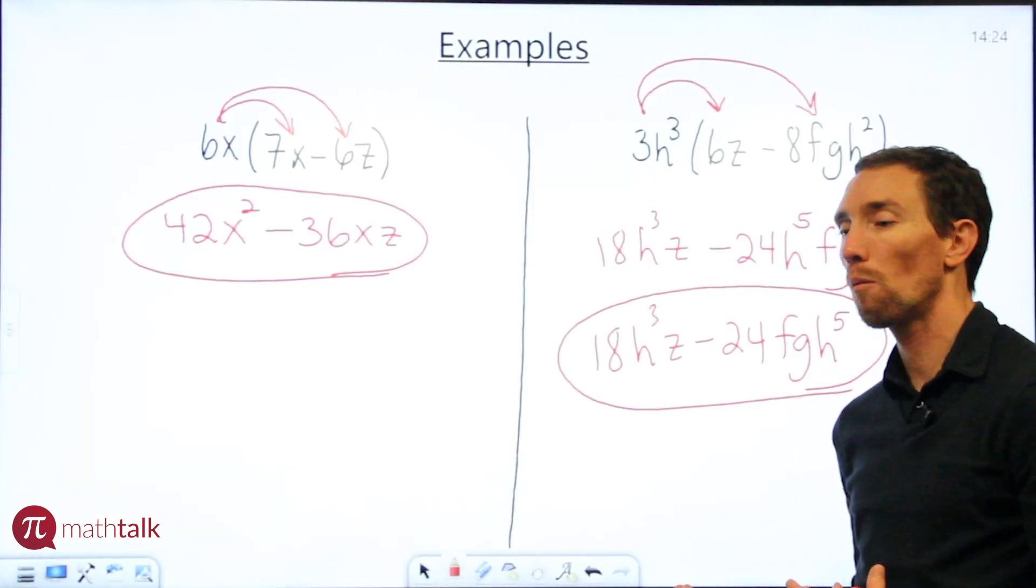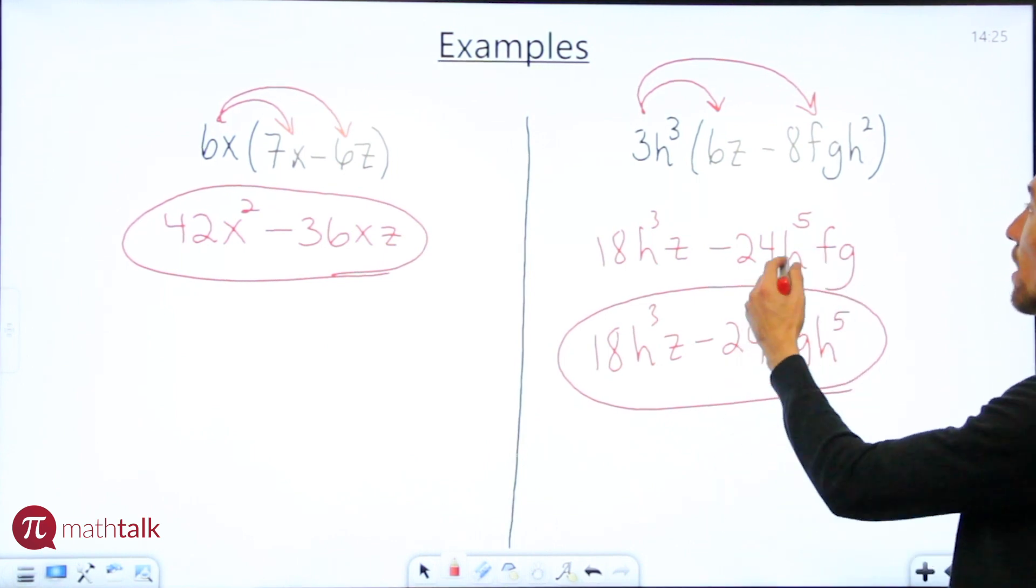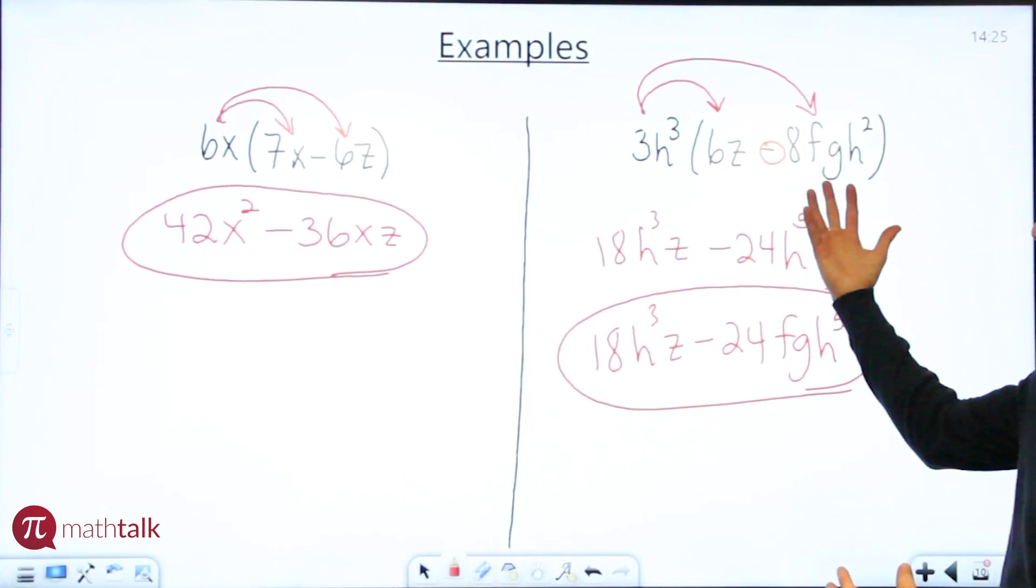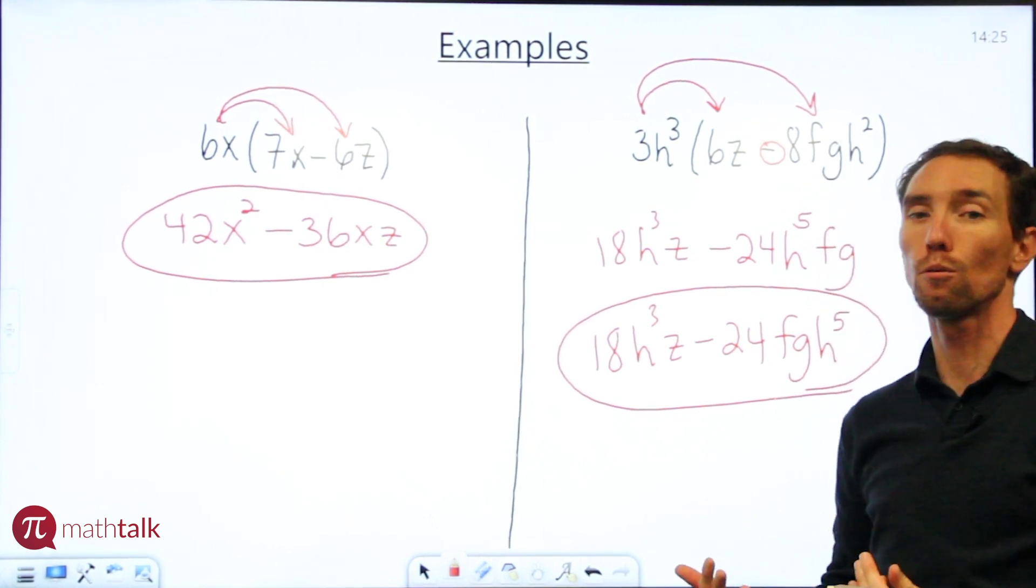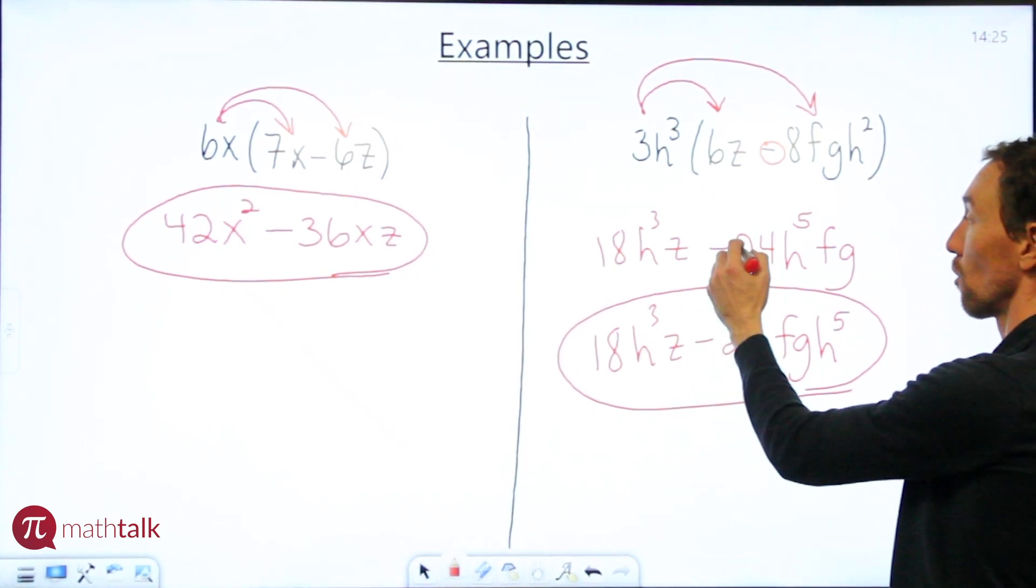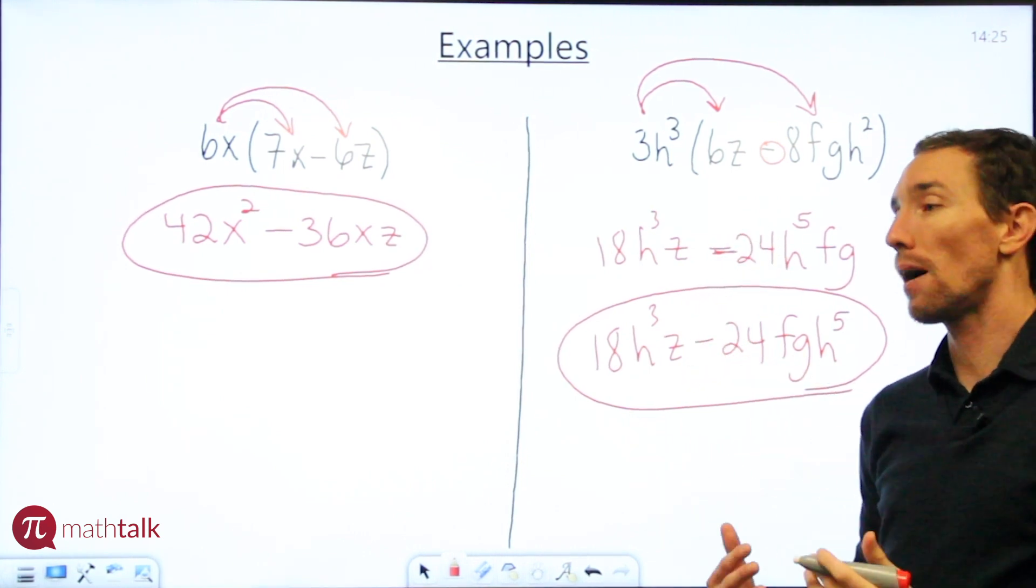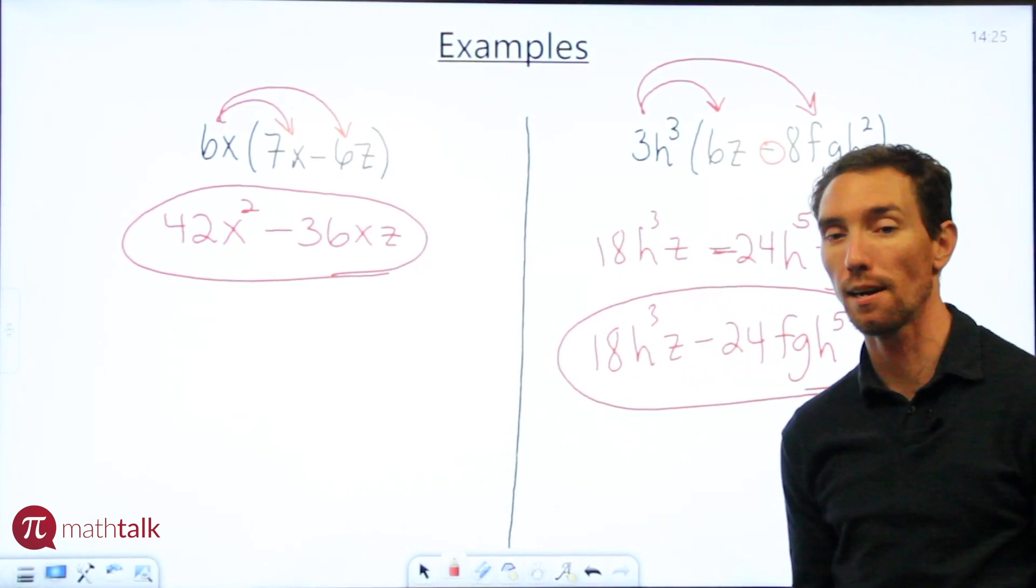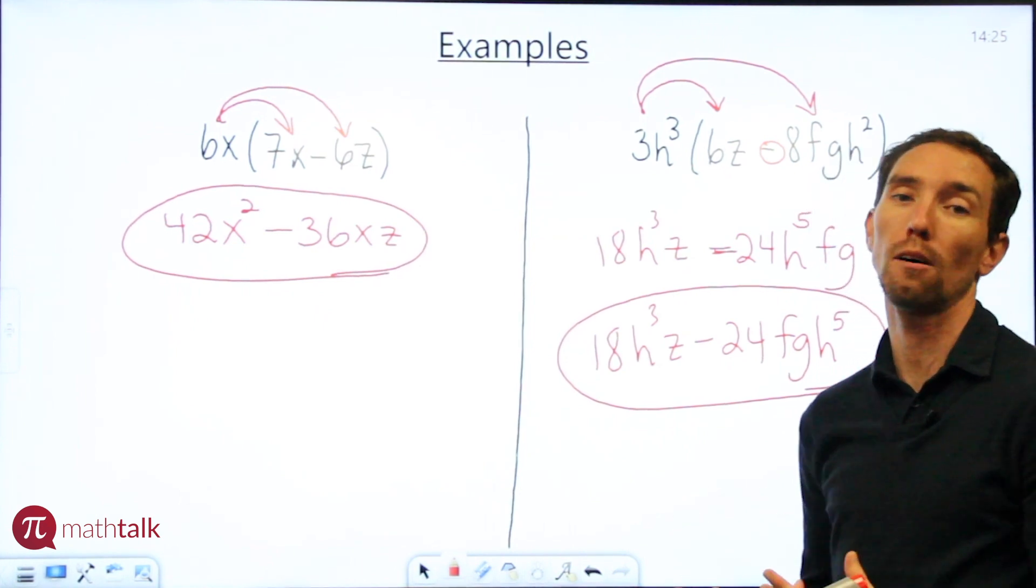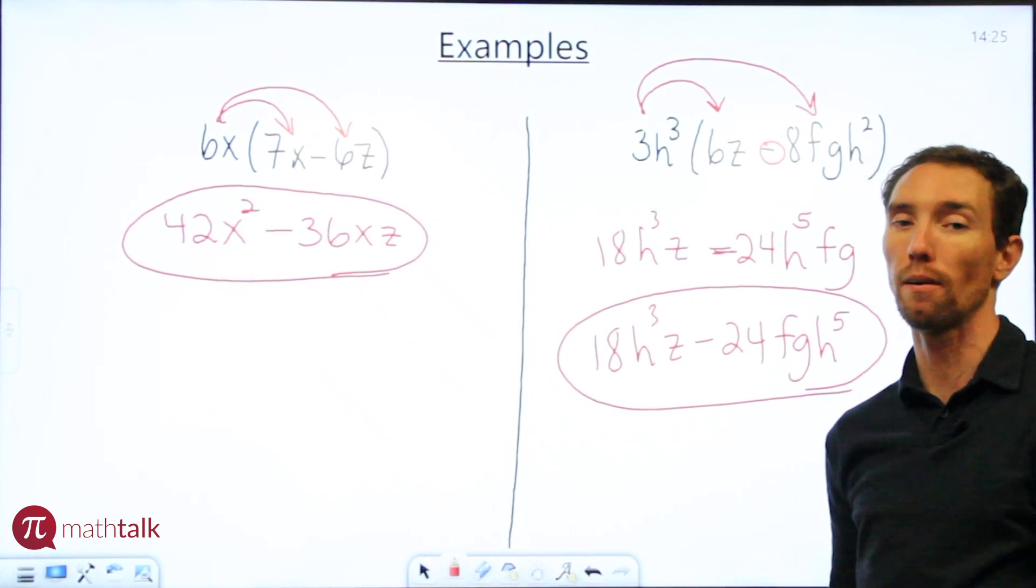One question I get asked a lot is how do you know whether it's negative or positive in the middle? What I do is take whatever the middle symbol is—like negative—and attach it to the number next to it, so it's negative 8. Then I use the multiplication rule: positive times negative gives negative, so I include that in my answer. Positive times positive is positive; negative times negative becomes positive. It just works itself out.